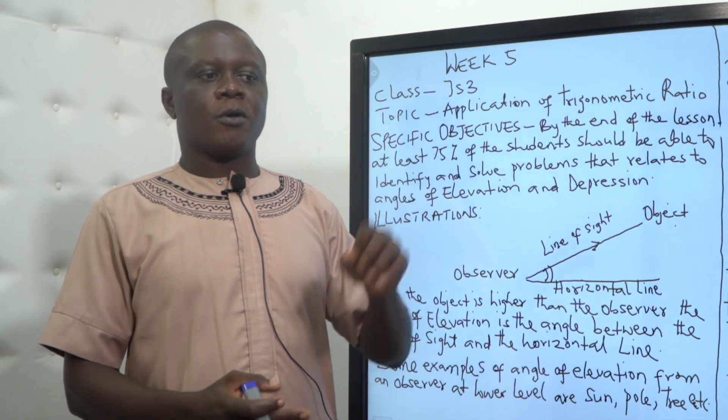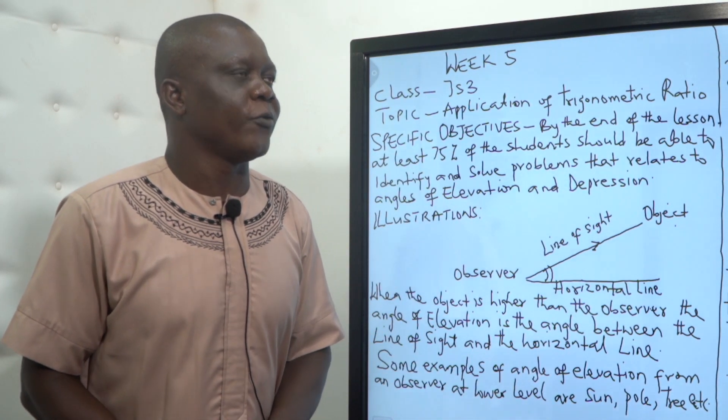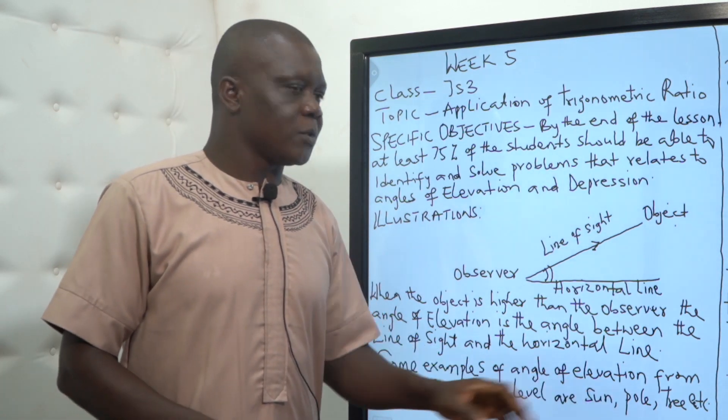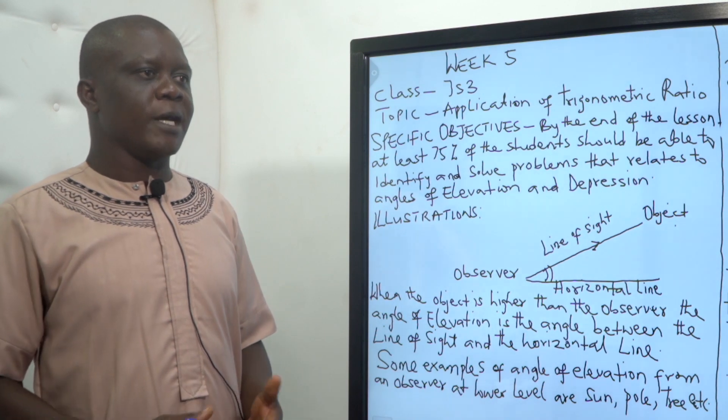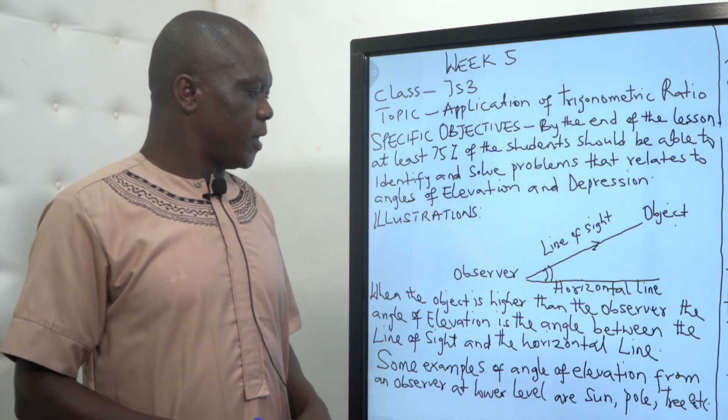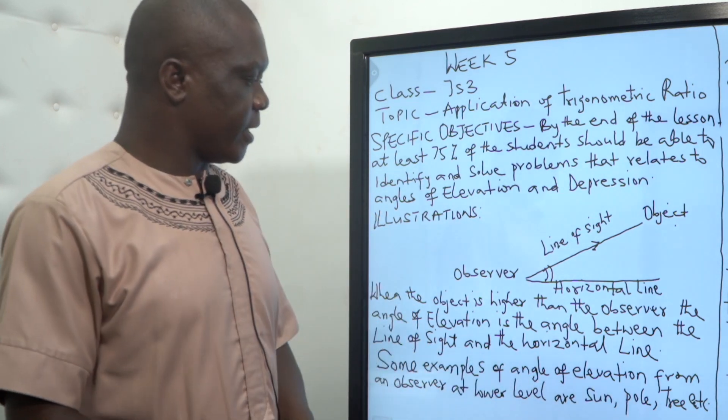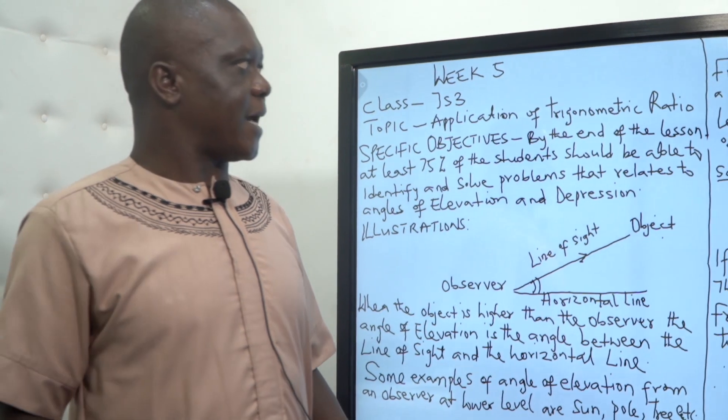Examples of angle of elevation include an observer at lower level looking at the sun. Like if you are standing on the ground and want to see the sun, you will raise your head up. If you want to see something on top of a tree, and some other examples like that.